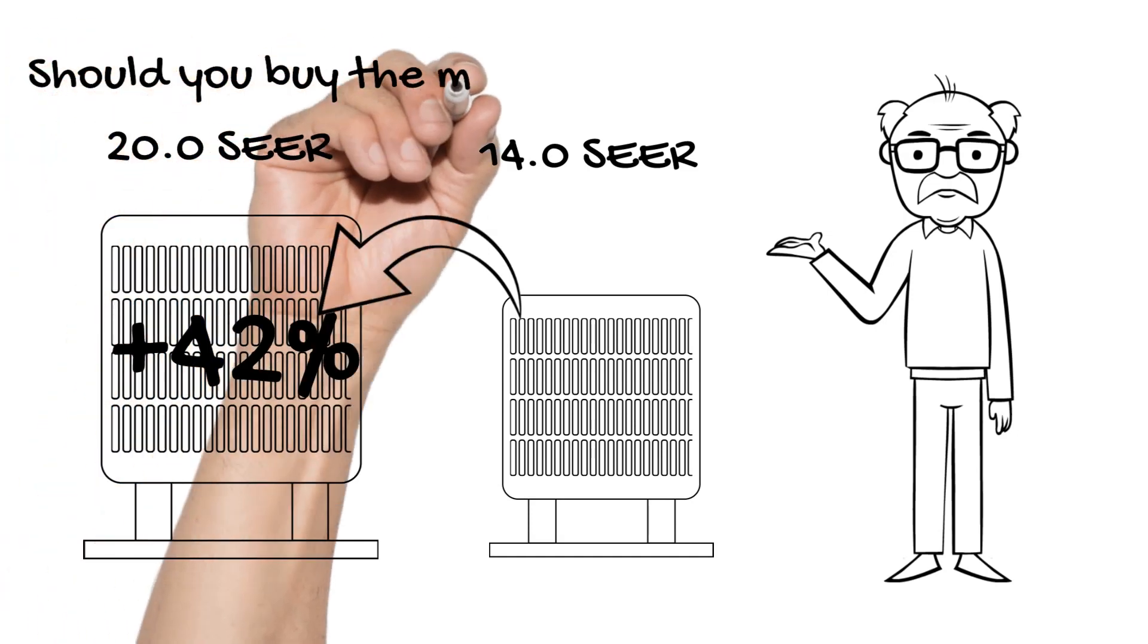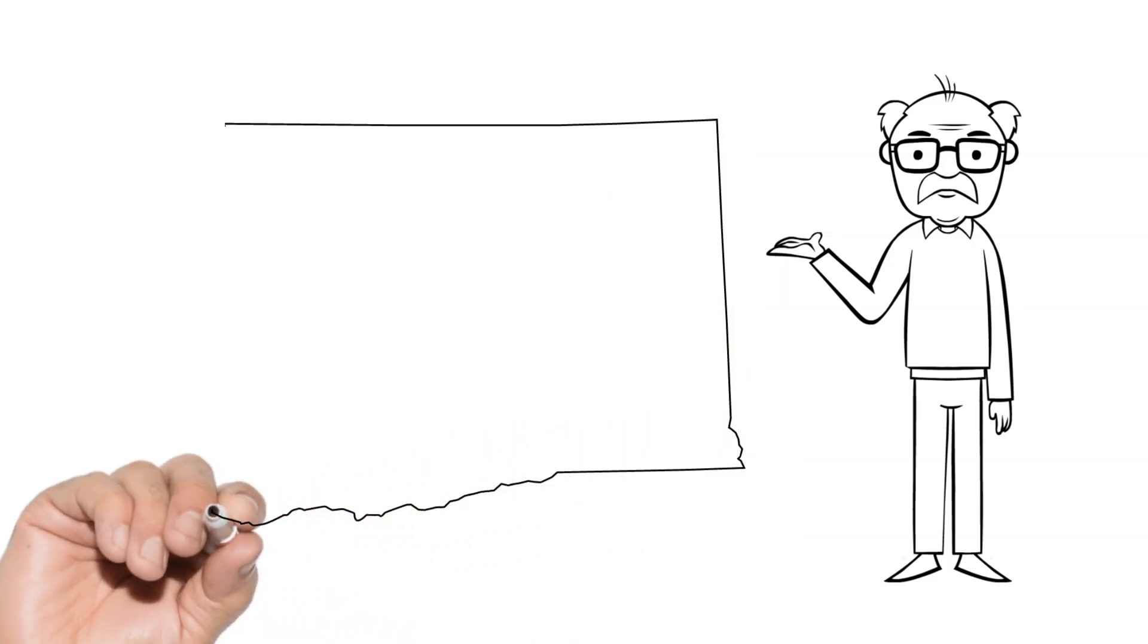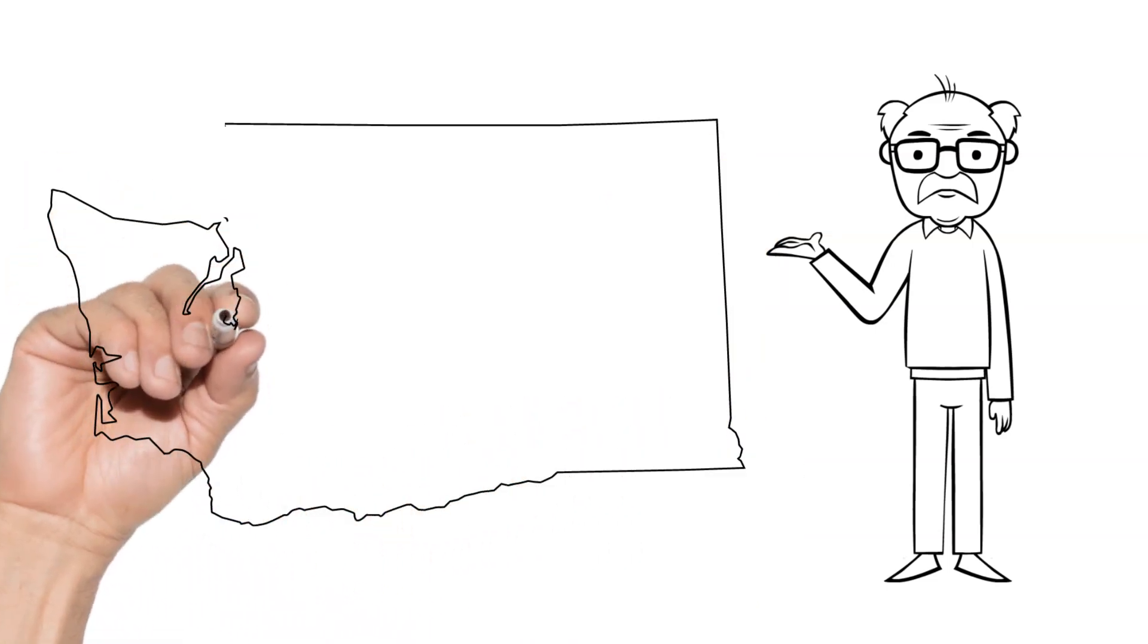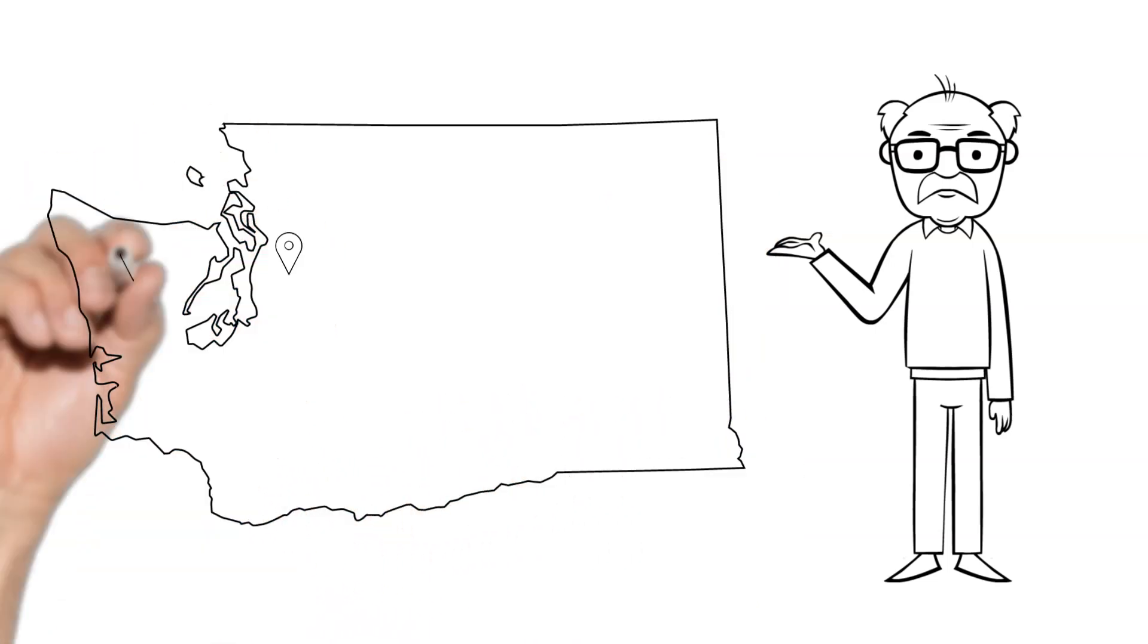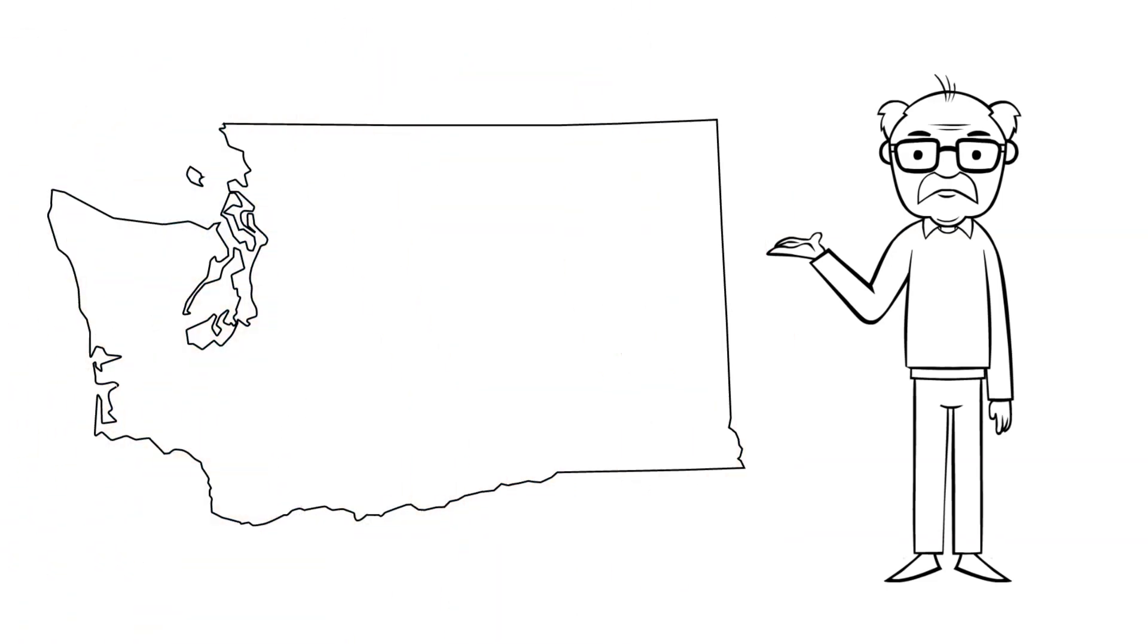Should you buy the most efficient unit then? Electric rates vary depending upon your utility company. Many areas of Washington State have rather low electric rates. Because of this, cooling costs are not significantly high.